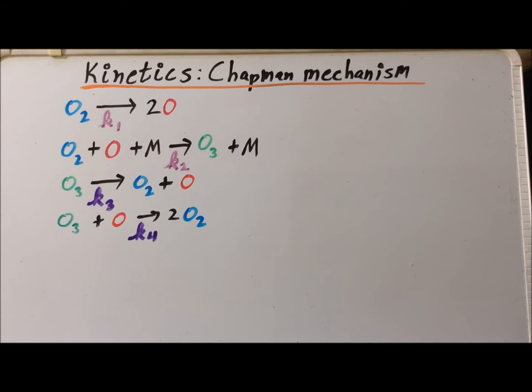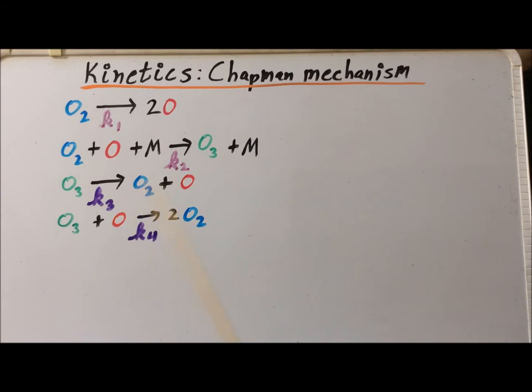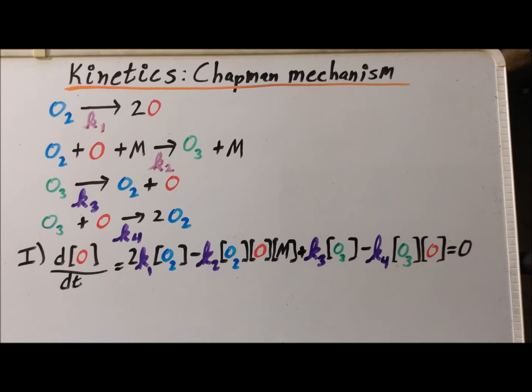Because we have a large number of similar-looking oxygen species — namely oxygen atoms, dioxygen, and ozone — we have denoted each of these with a different color to help make the reaction mechanism and the resulting kinetics clearer.